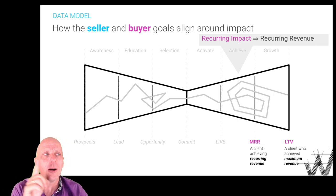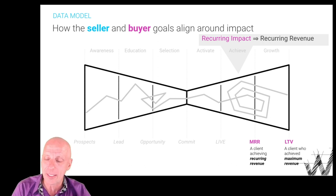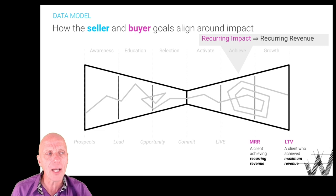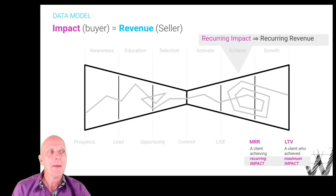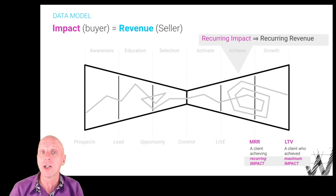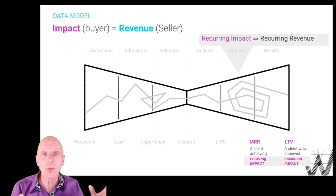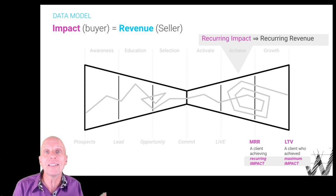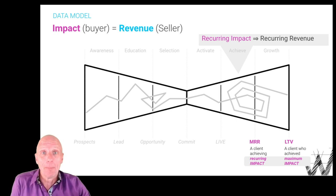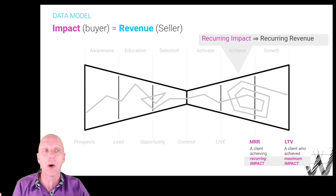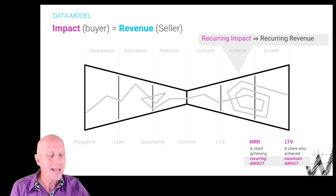If recurring revenue is the result of recurring impact, they are interchangeable. If I achieve recurring impact, we're going to get recurring revenue. And if we achieve maximum impact, we're also going to achieve maximum revenue. In order to achieve all this revenue, we simply have to deliver the client the impact we promised. You bought an Uber ride and it dropped you off exactly where you wanted to, at the time you wanted — it's that simple. Now, in order to be able to deliver that impact, I'm going to go upstream, back into the funnel.